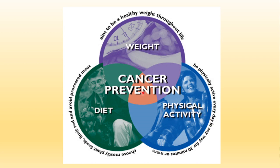Cancer is spreading at a very fast rate because we are exposed to so many radiations and chemicals now. The best approach is to think of preventing it — by maintaining our weight, following a proper diet, and carrying out proper physical activity. We should choose a good diet, avoiding preservatives and processed food, and engage in lots of physical activity. If we keep ourselves healthy, even if exposed to some carcinogens in the environment that we cannot avoid, we will be better able to prevent cancer.